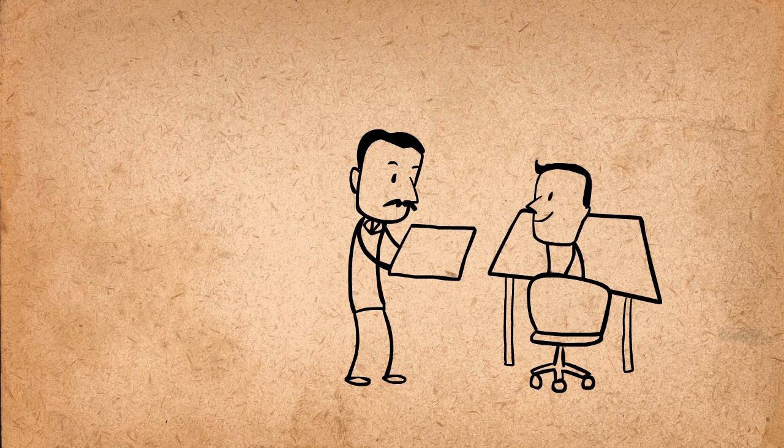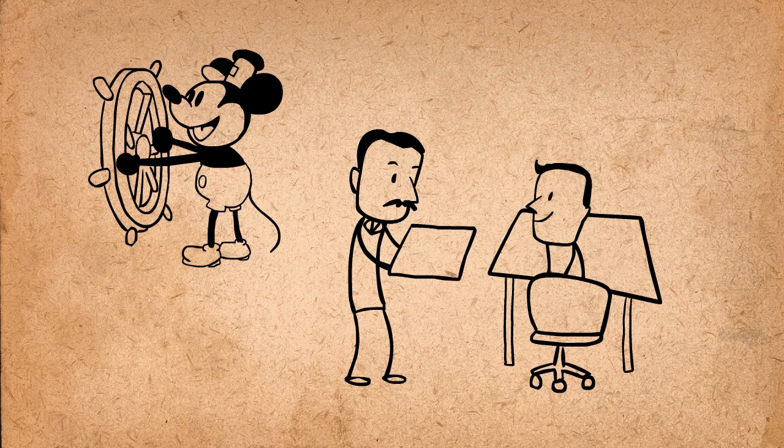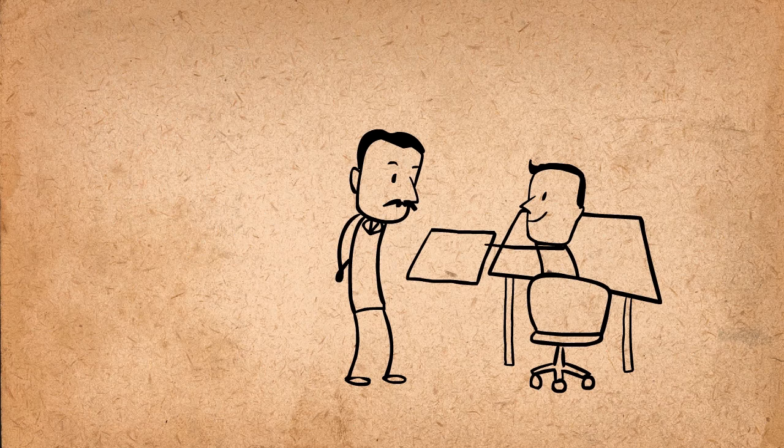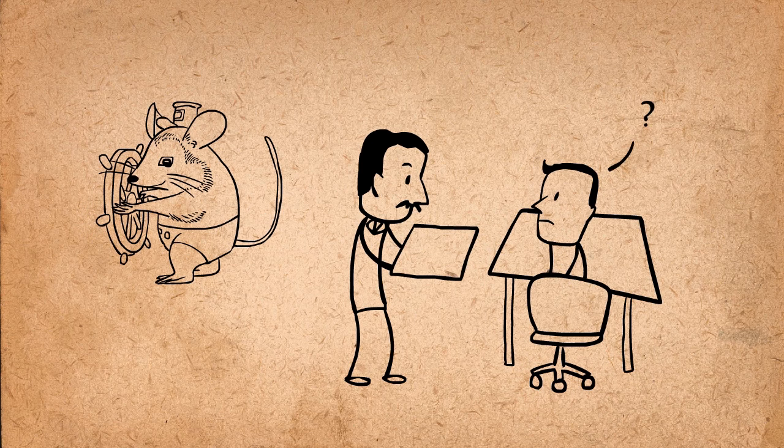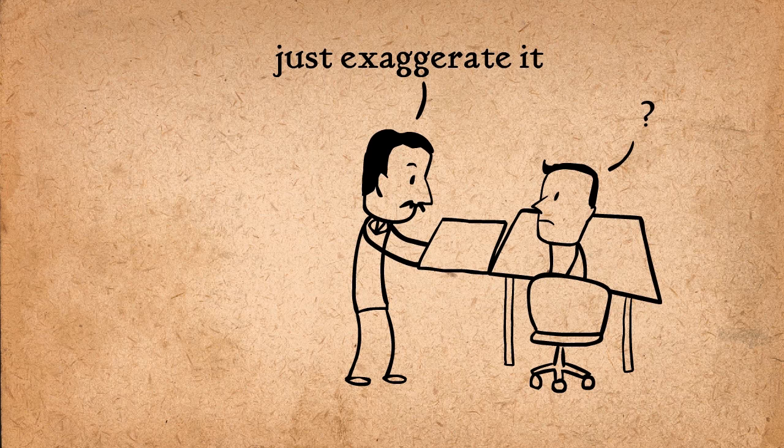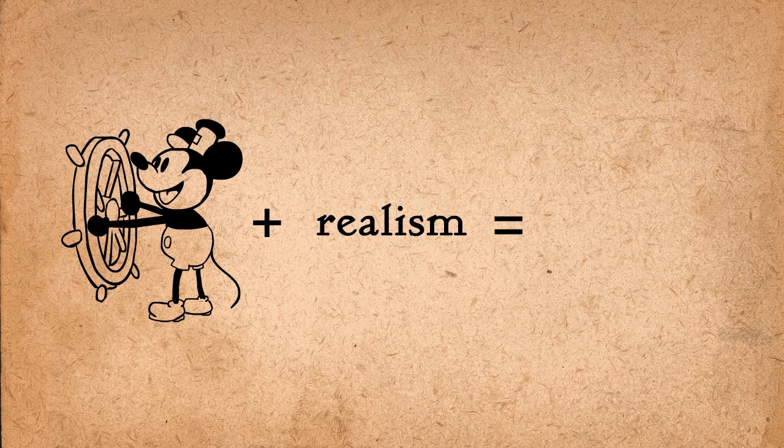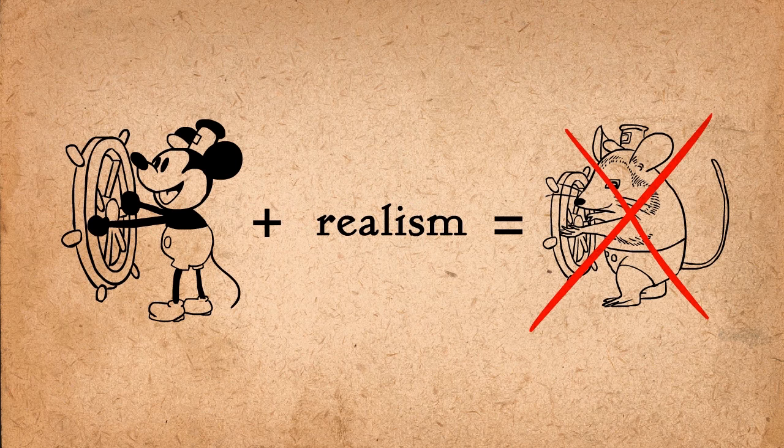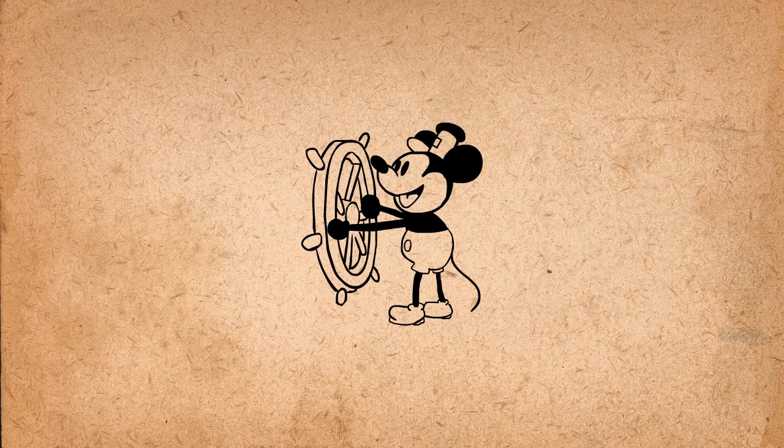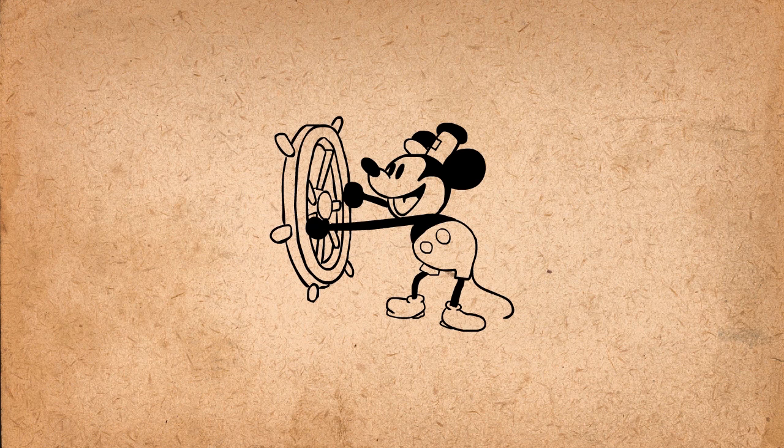So the early animators at Disney would get confused because Walt would tell them to add more realism, but then when they changed it, he would criticize the result because it wasn't exaggerated enough. In Walt's mind, there was probably no difference. Making it more realistic didn't mean make the physics and proportions more consistent with reality, but rather make the idea or essence of the action more apparent and real.